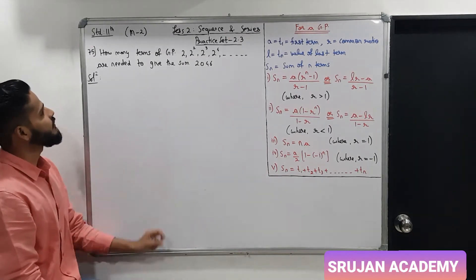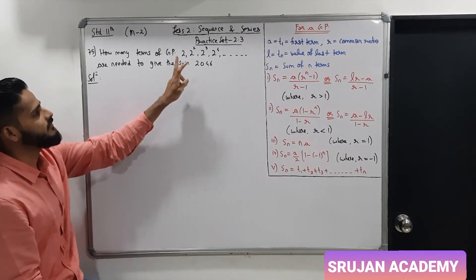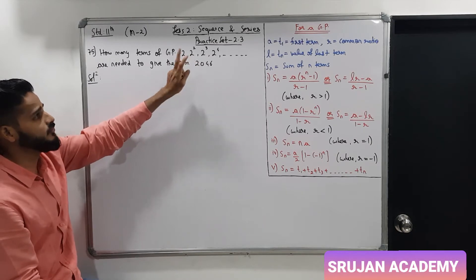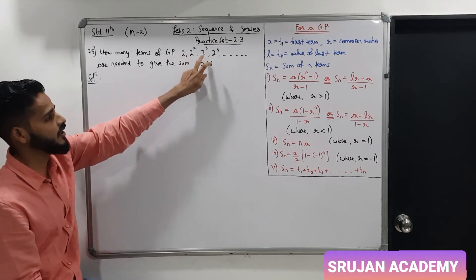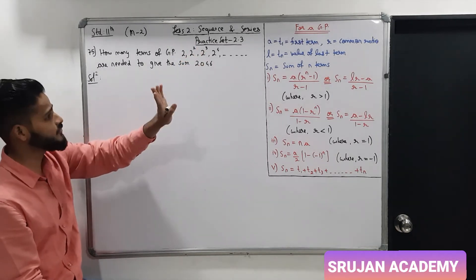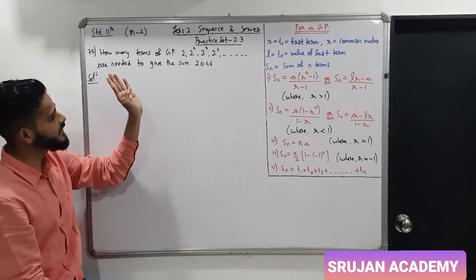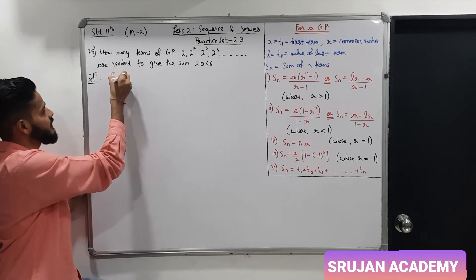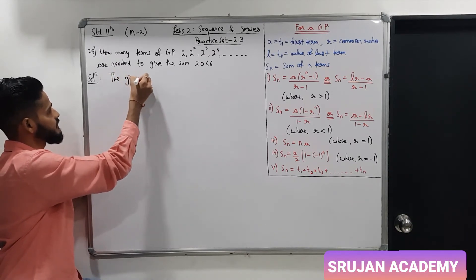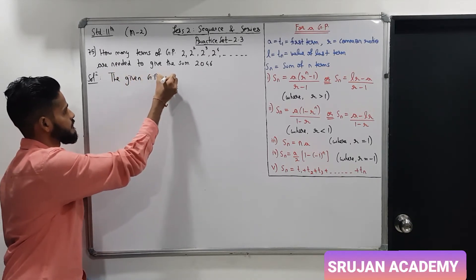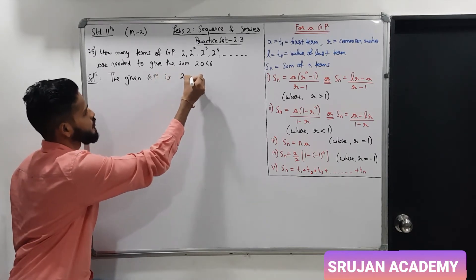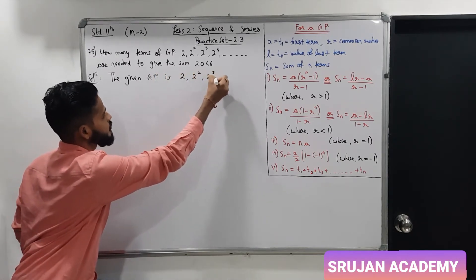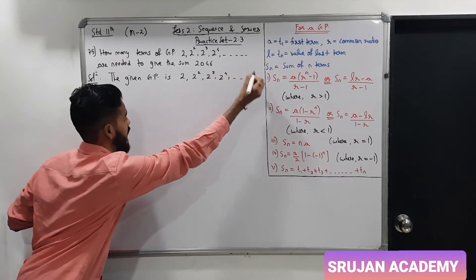75th question. How many terms of the GP given by first term 2, second term 2 square, third term 2 cube, fourth term 2 raise to 4 and so on are needed to give the sum 2046?